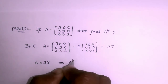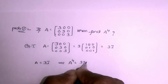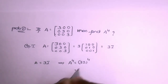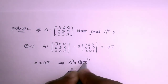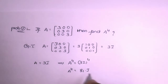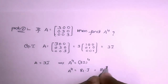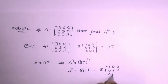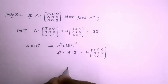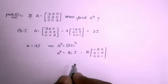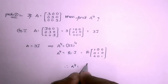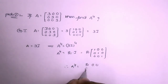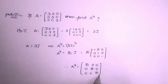We want A to the power 4. So A⁴ = (3I)⁴ = 3⁴ · I⁴ = 81 · I. Since I⁴ = I, we get A⁴ = 81 times the identity matrix, which equals 81000081000081. That is the answer.